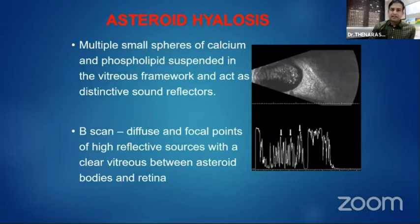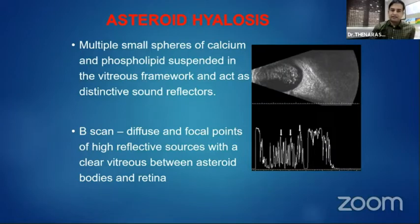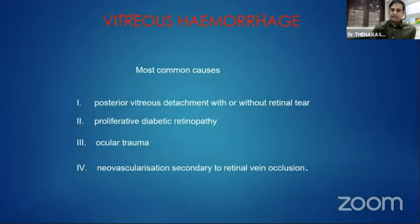Coming to some clinical scenarios: asteroid hyalosis is one we commonly come across. On ultrasound it appears as small mild-to-moderate vitreous dot echoes with a clear translucent space behind the vitreous dot echoes and the retina — this is classical of asteroid hyalosis. Vitreous hemorrhage has different causes: proliferative diabetic retinopathy, PVD-induced, or ocular trauma. Ultrasound is very helpful in diagnosis and management of these cases.